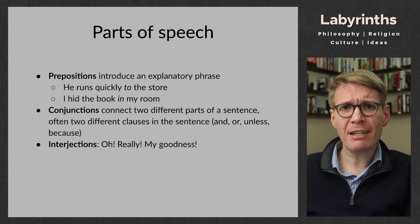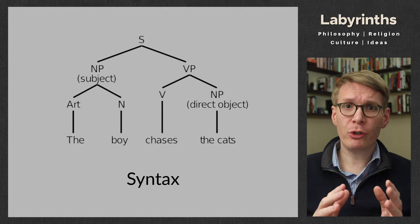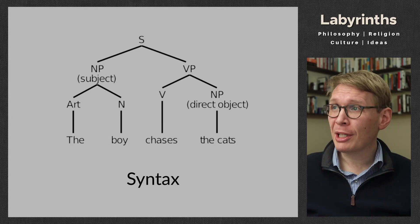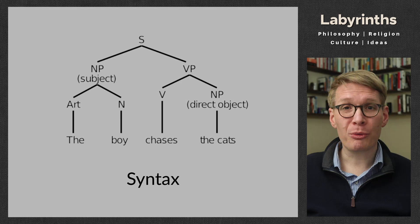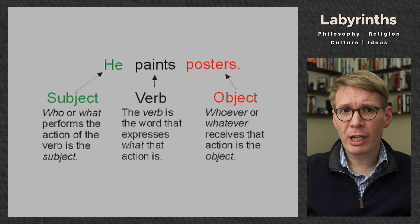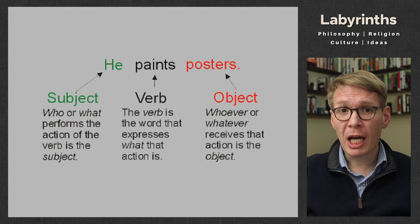Those are the eight parts of speech — the basic units of what a sentence is made of in English. Now what we want to do is take those units and put them in order such that we can convey meaning to a listener or reader. That is the area of syntax. Here we have a diagram for the sentence 'the boy chases cats,' identifying the parts of it. Let's look at the parts of a sentence. Take this example: he paints posters. This includes a subject, a verb, and an object. Every sentence in English needs to include a subject, a verb, and an object, even if some of those might be implied.